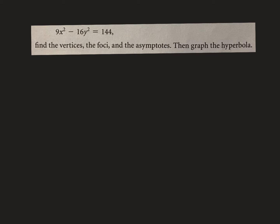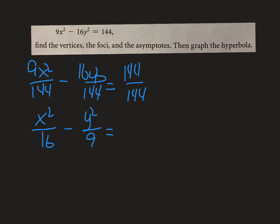Let's take one here. There's your equation. Find the vertices, foci, and asymptotes, then graph. I need to equal one, so I'm going to divide everything by 144. 9x² by 144, 16y² by 144, and 144 by 144. Everything by 144. 9 goes into 144 16 times, 16 goes into 144 9 times, and that's 1.